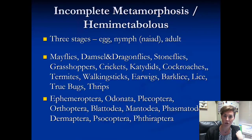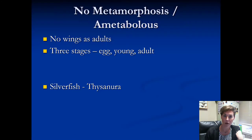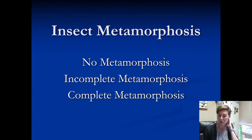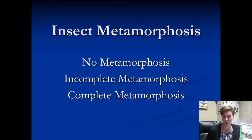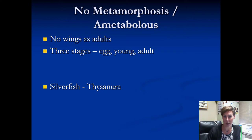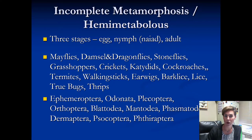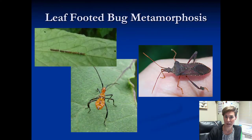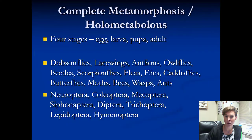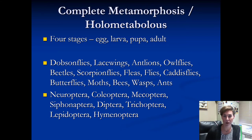So that's what you need to know for the types of metamorphosis for the 4-H contest. Remember there are three different types: no metamorphosis (ametabolous), incomplete metamorphosis (hemimetabolous), and complete metamorphosis (holometabolous) — the whole thing, with a larva and a pupa stage.